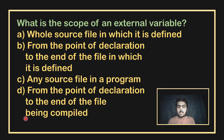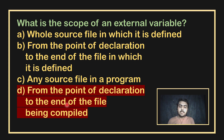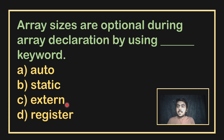An external variable's scope is from the point of declaration to the end of the file in which it is defined, or accessible to any source file in the program. This is why it is called external — when declared, it is visible in the whole file.